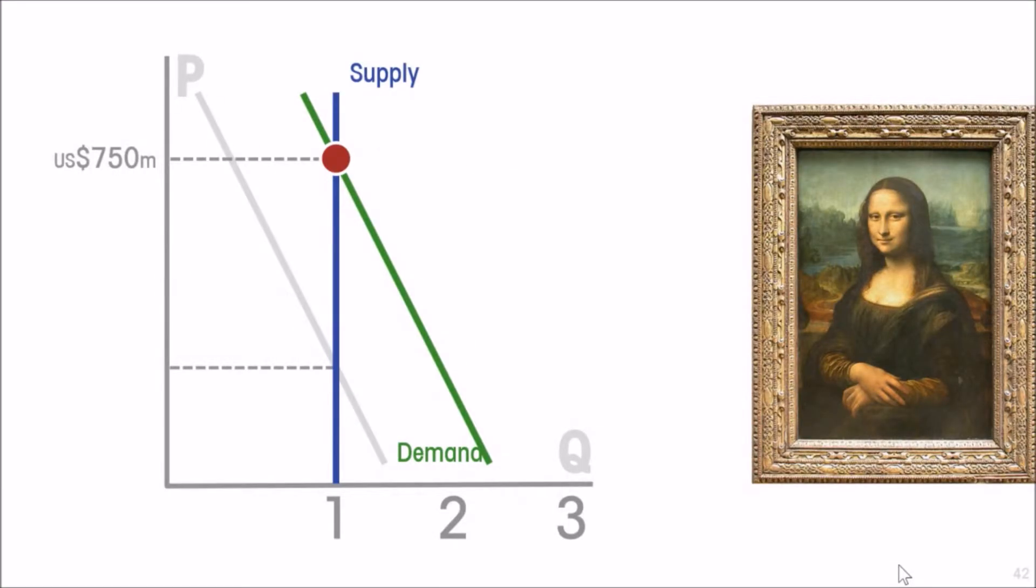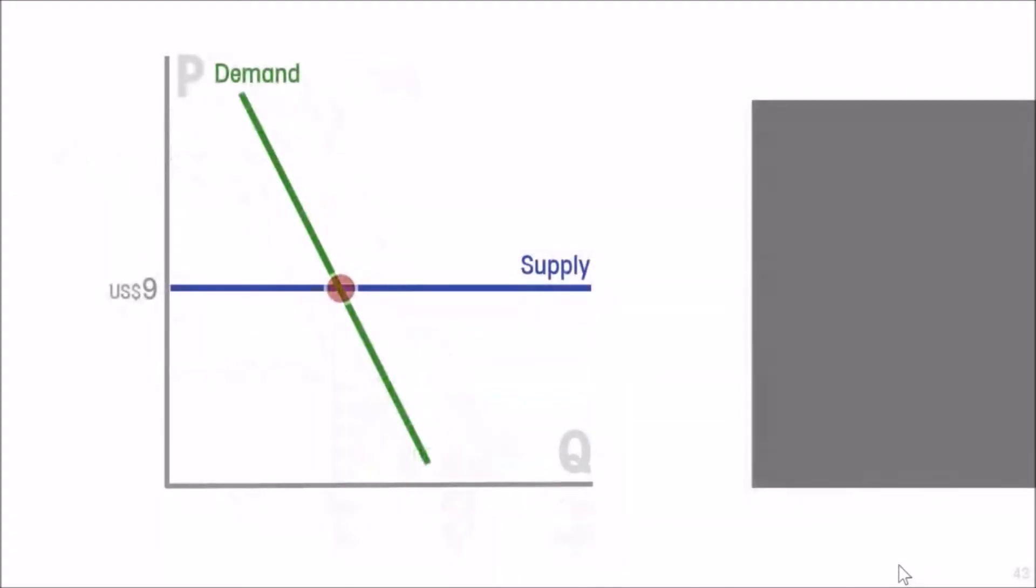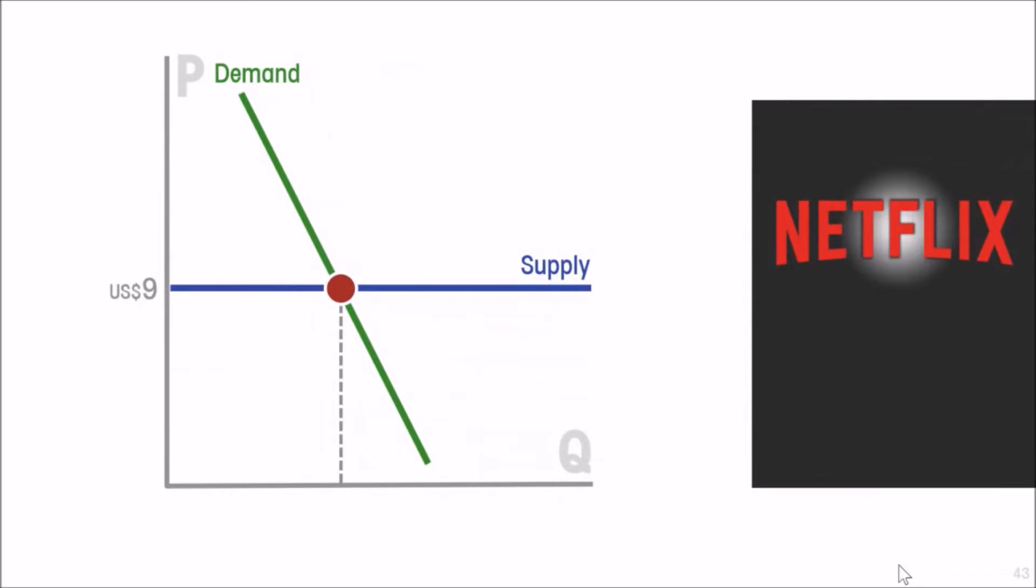This is an example of a vertical supply curve. Can we think of a case that might give us the opposite—a perfectly elastic supply curve? Well, digital subscriptions do that, such as a subscription to Netflix.